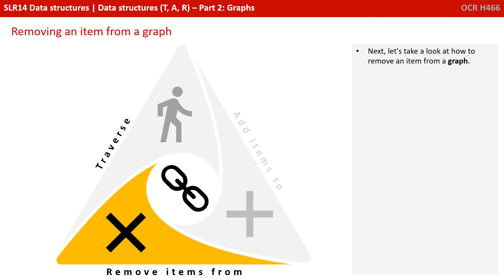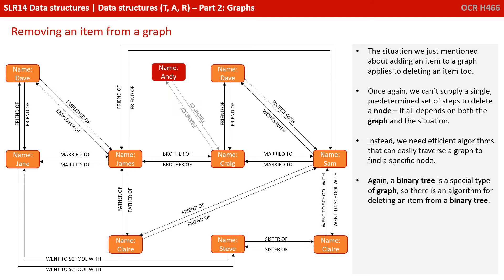So let's take a look at how to remove an item from a graph. The situation we just mentioned about adding an item to a graph applies to deleting it too. Once again, we can't supply a single predetermined set of steps to delete a node — it all depends on both the graph and the situation. Instead, we need efficient algorithms that can easily traverse a graph to find a specific node. A binary tree, being a special type of graph, allows us to provide a specific algorithm for deleting, and we'll cover that in the binary tree video.